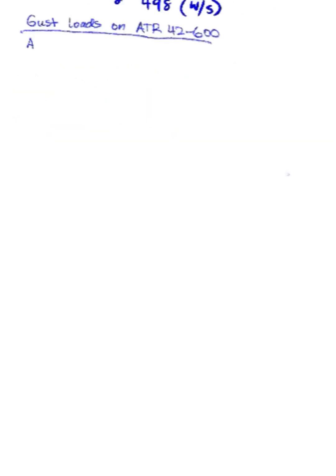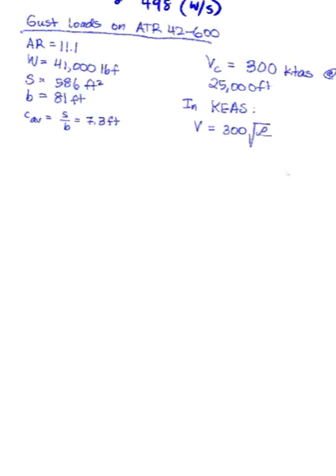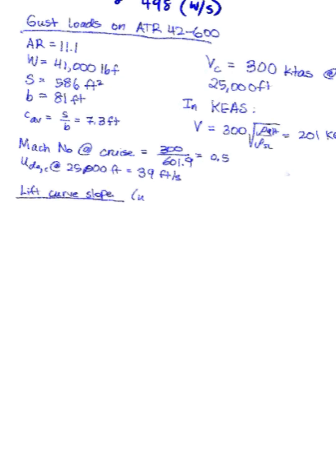So through a practical example, let's look at gust loads on an ATR-42-600 type vehicle. Just to mention C average is the average chord. So our design cruise speed here is about 300 KTAS at 25,000 feet. And then we want to get our equivalent airspeed. And we can get the Mach number at cruise by dividing by the speed of sound and we get about 0.5.